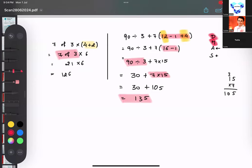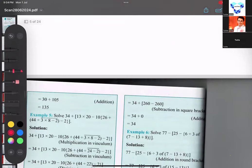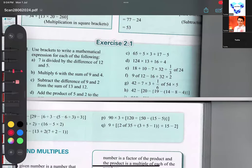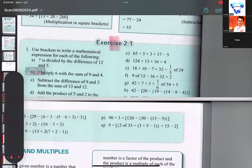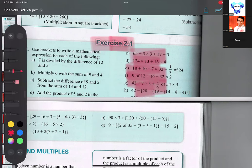Now based on this thing, you have to finish this first exercise. 2.1 is totally based on this thing. Can you see this? Yes sir. So this will be your homework based on this thing, BODMAS rule.